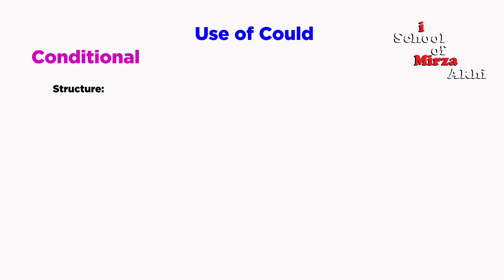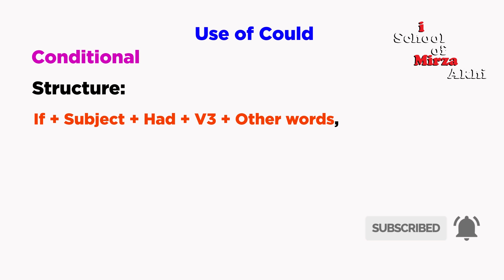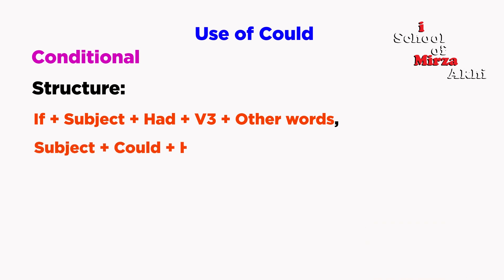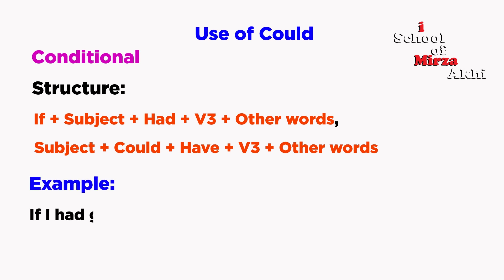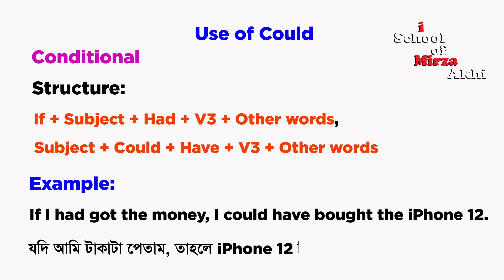Conditional structure: If plus subject plus had plus V3 plus other words, subject plus could have plus V3 plus other words. For example: If I had got the money, I could have bought the iPhone 12.